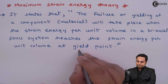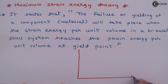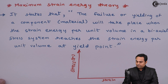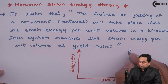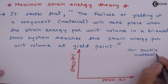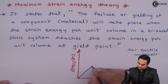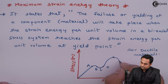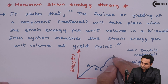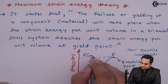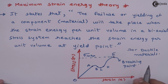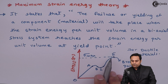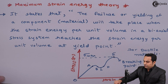To explain this we need a diagram. Here I am drawing the stress-strain graph for ductile materials. From this graph it is clear that at point E the stress is maximum, so this point E is also called the yield point.